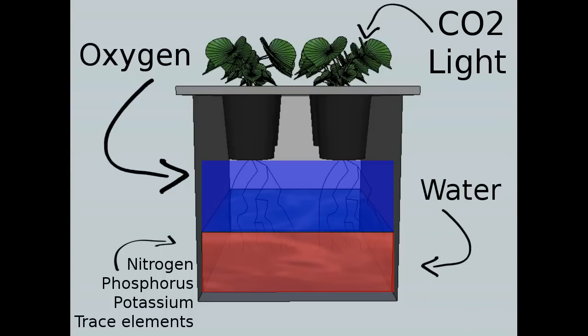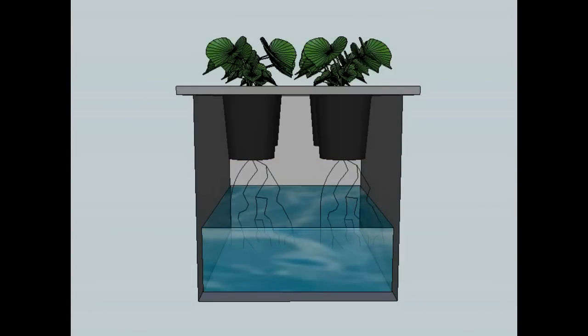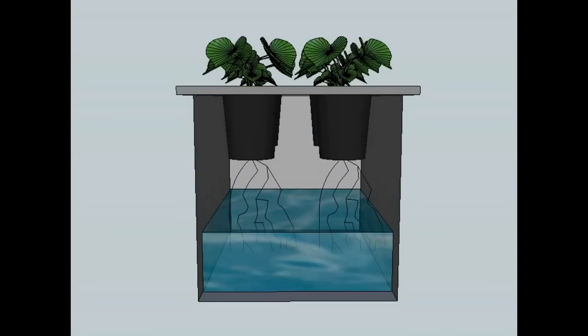The beauty of the Kratky method is that it automatically provides oxygen to the roots and adjusts the amount of oxygen to the rate of plant growth. The more nutrient solution is used, the bigger the plant and roots get and the lower the water level in the tank will be, providing enough oxygen to the roots.